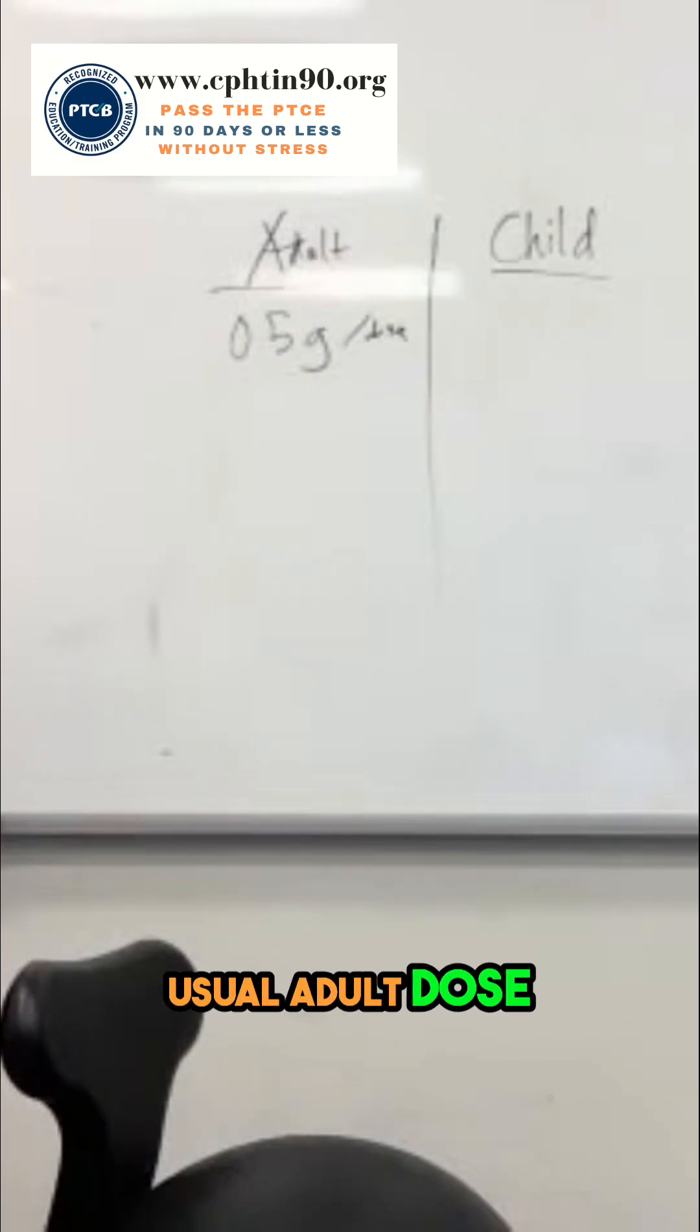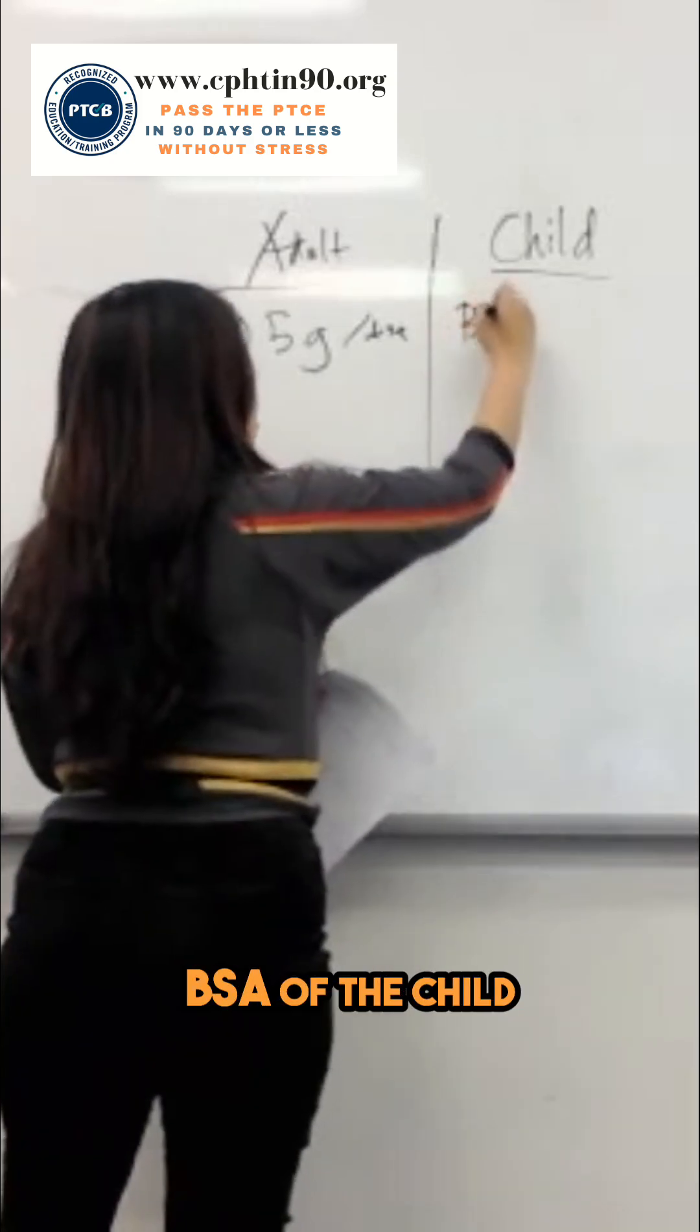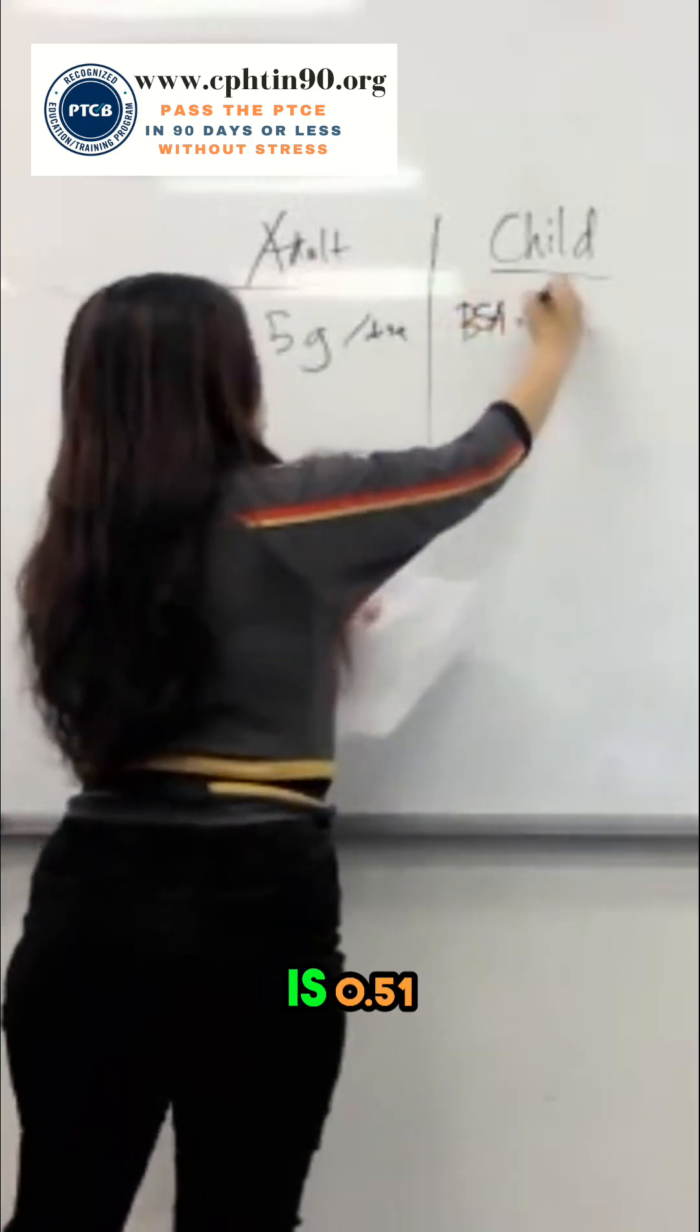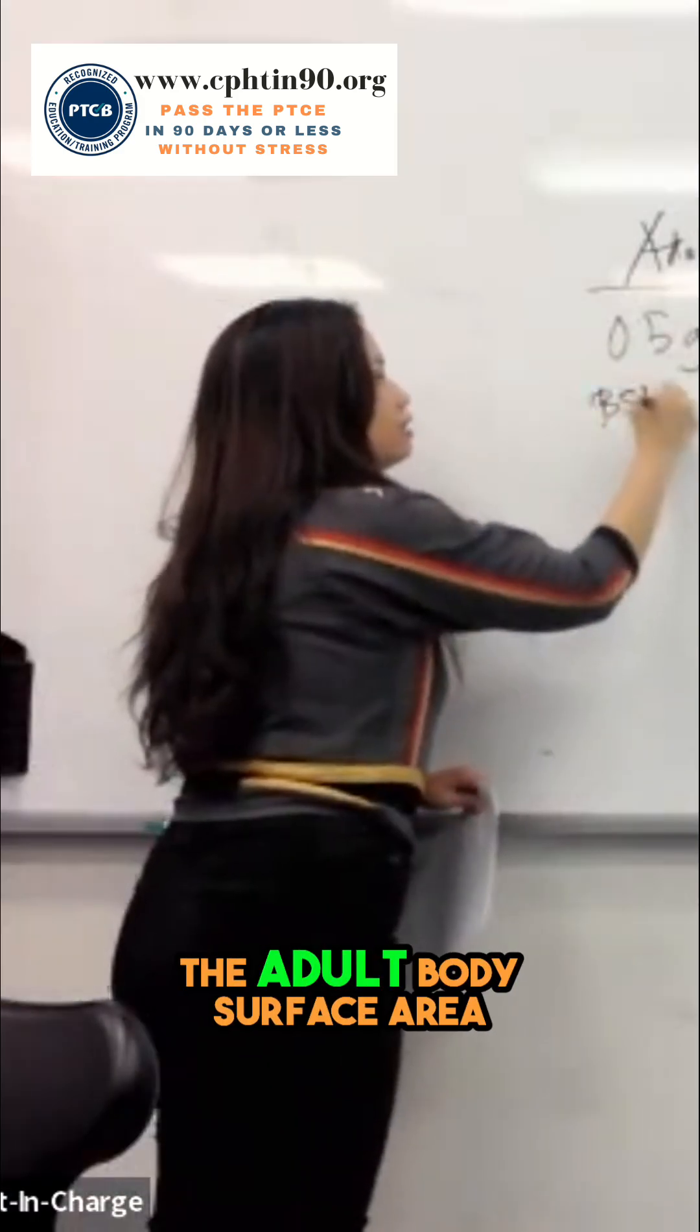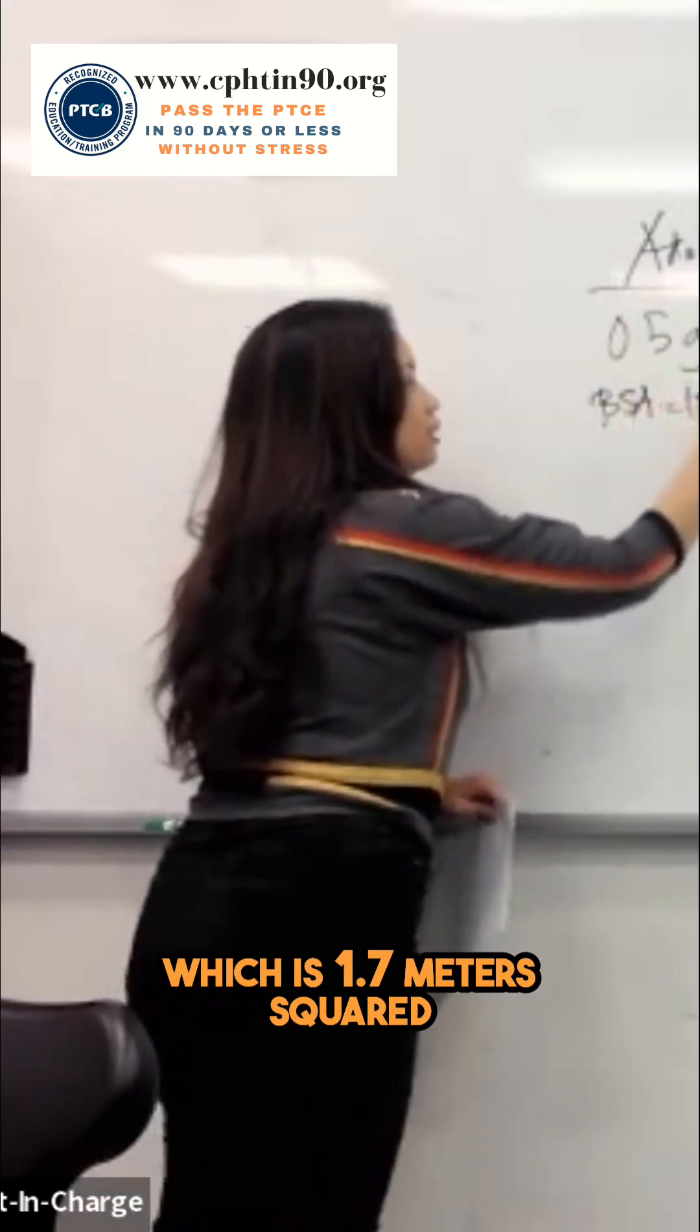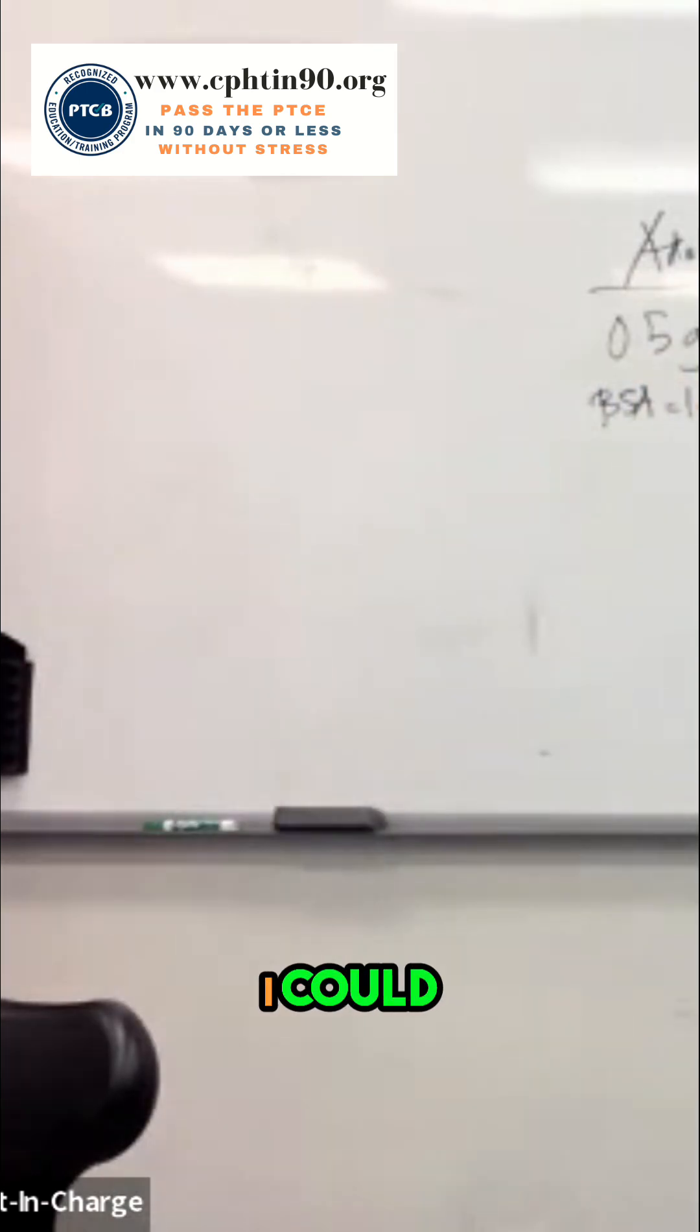And the usual adult dose, the child's body surface area is 0.51. Will I have that right? Then I should have the adult body surface area, which is 1.7 meters squared. Now, can I work that equation? I could, okay?